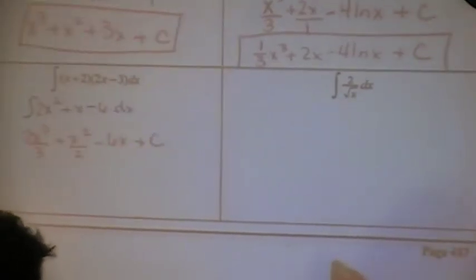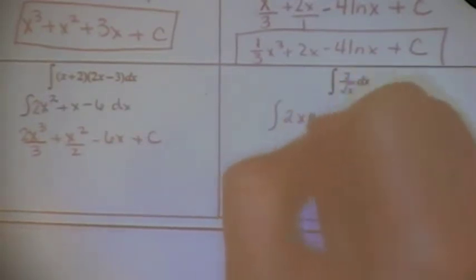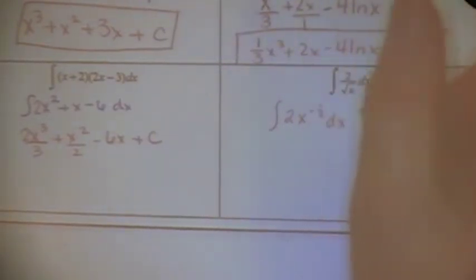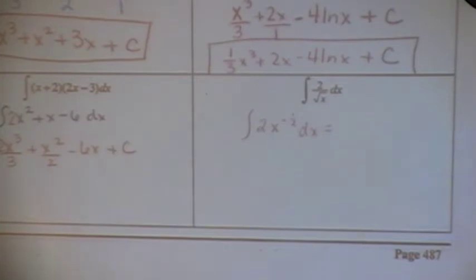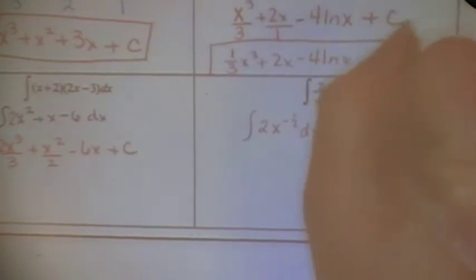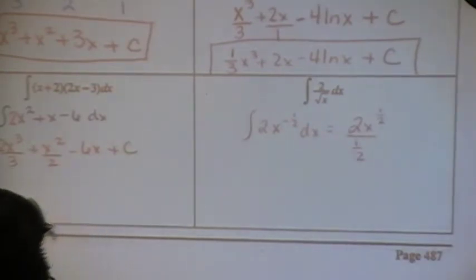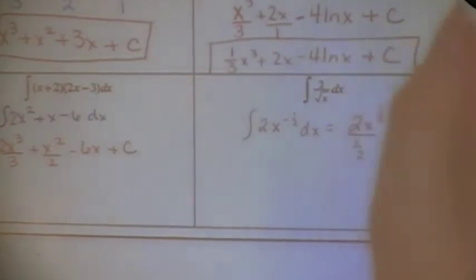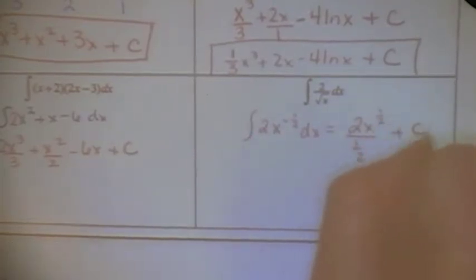Rewrite this as 2X to the negative one half. So now I'm going to take the anti-derivative. I'm going to add 1 to the negative one half, and that gives me one half. Then you have to divide by one half. So you've got 2X divided by one half, to the one half power — and 2 divided by one half is 4. So it ends up being 4X to the one half plus C, which is 4 square root of X plus C.